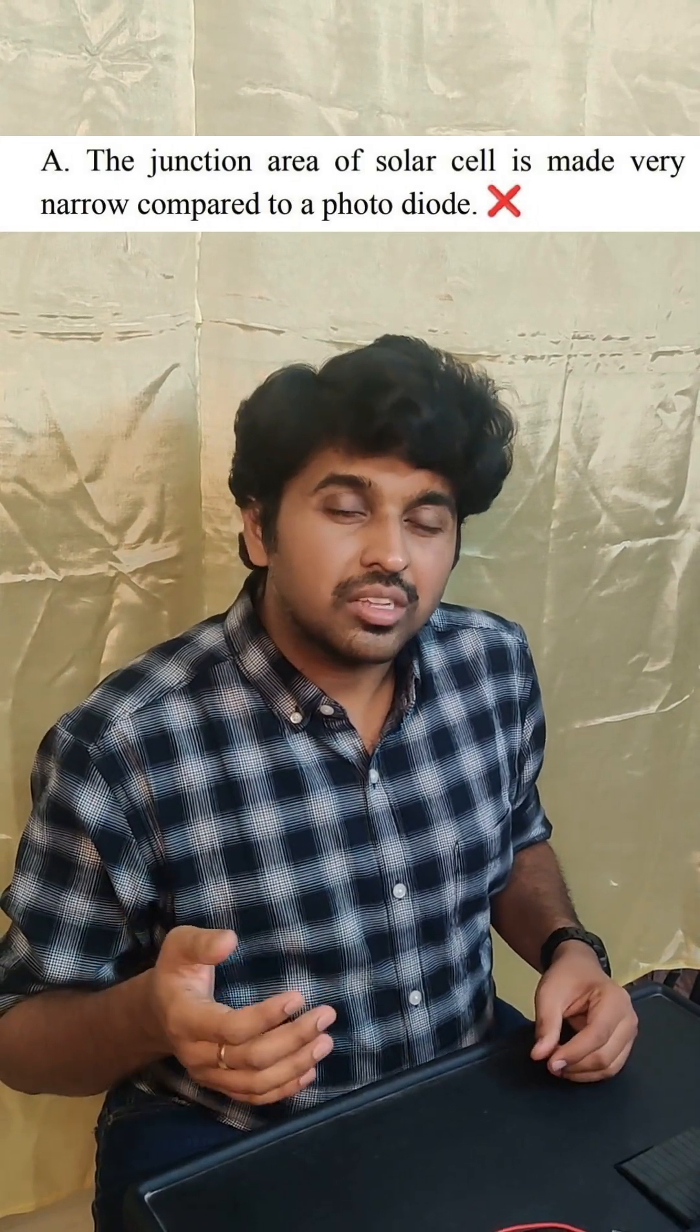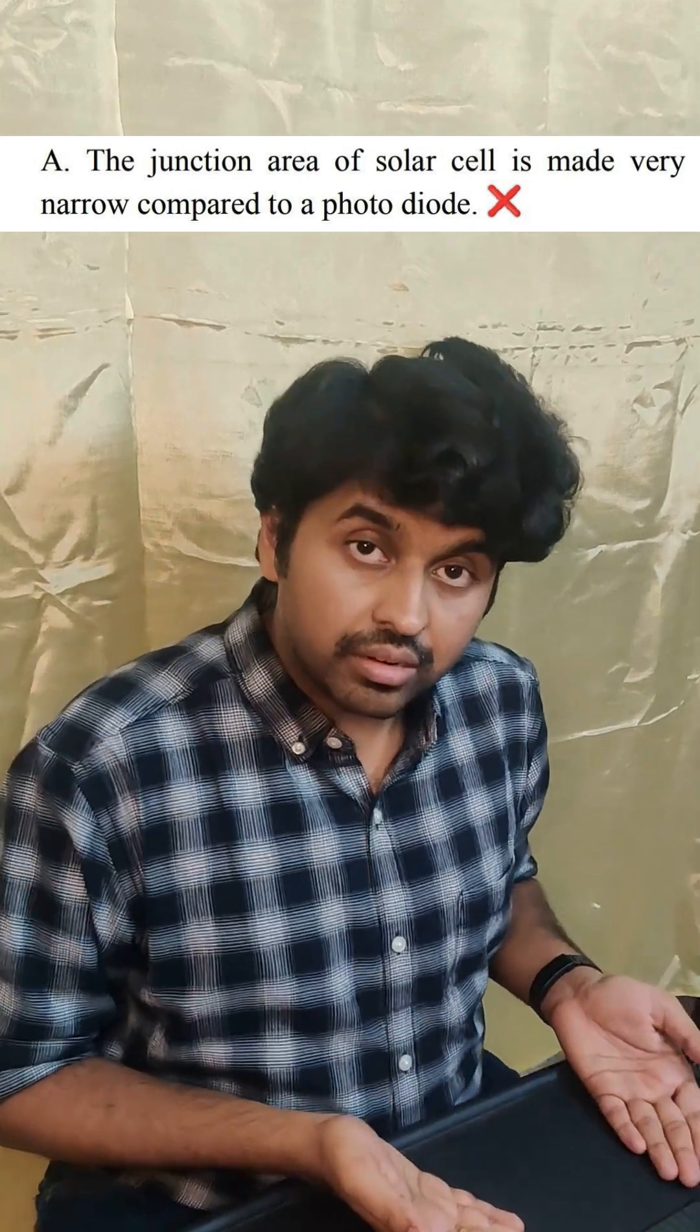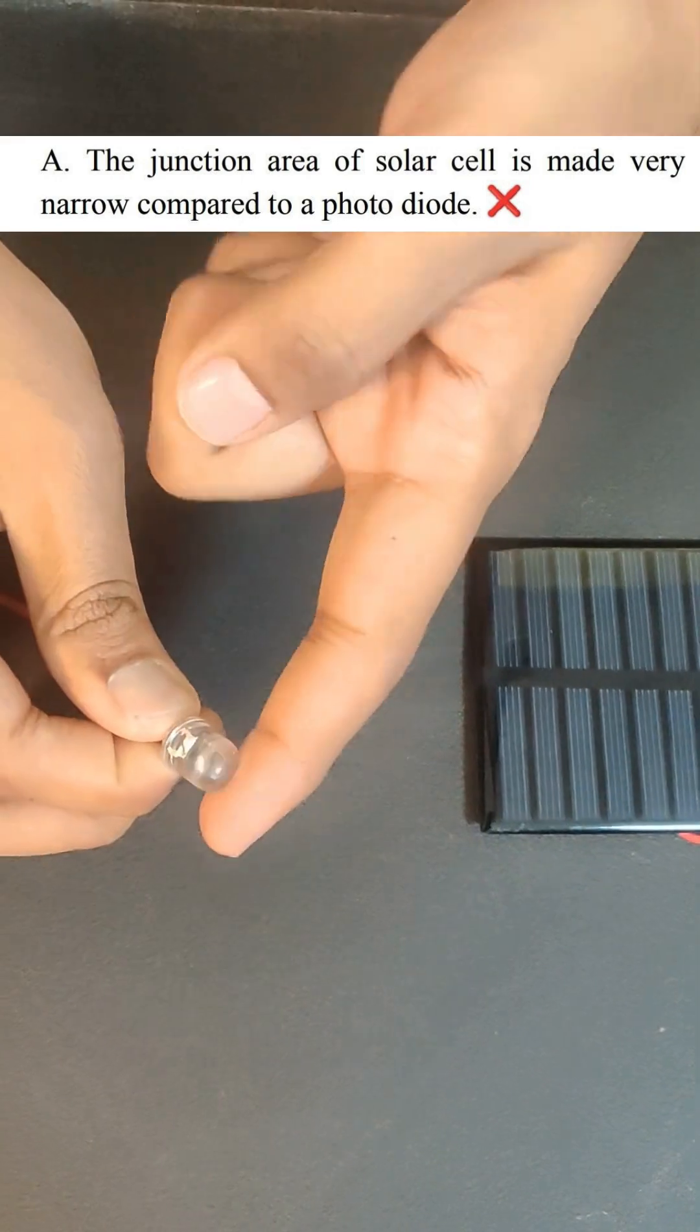The junction area of a solar cell is smaller compared to that of a photodiode. So let us look at the two right here. This is a solar cell. Photodiode is similar to this. It just has a black coating.